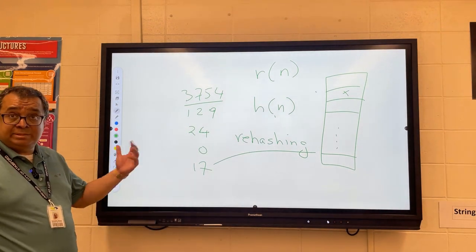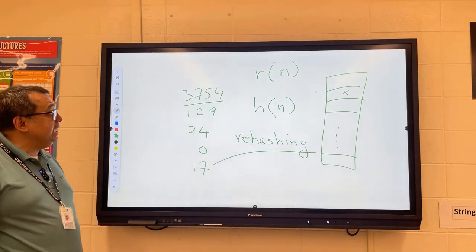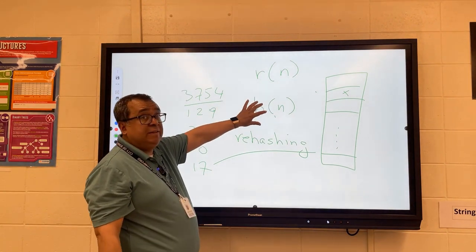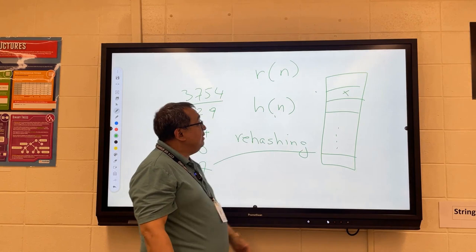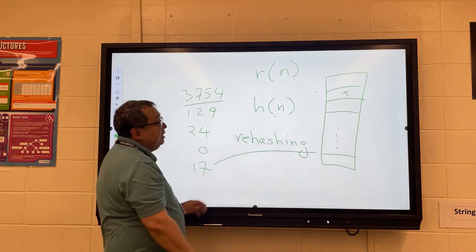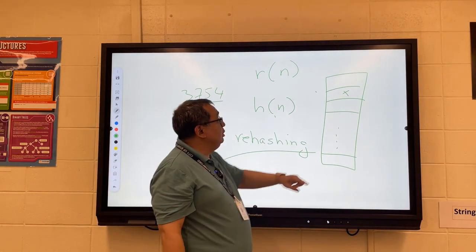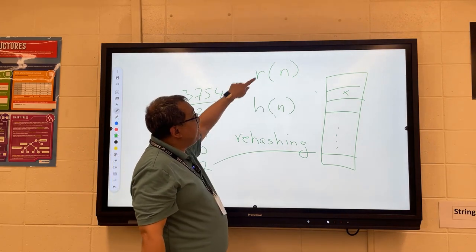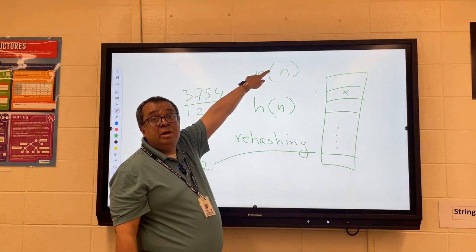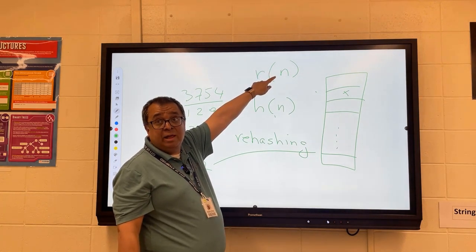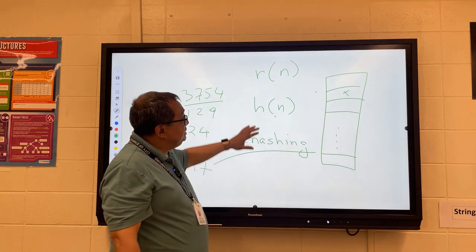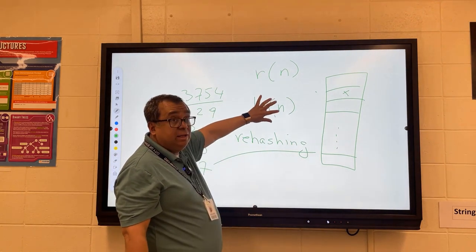And so we have some different possibilities here. One possibility is that when we hash a number, pass it through the function, get the index, we store it there. And then the next time we have a number, let's say it gives us the same hash value, what we can do is we can take that number and pass it through this other function, and that will hopefully give us a different value. So now this is a rehash. So if we get a collision on this one, we pass the number through that one.